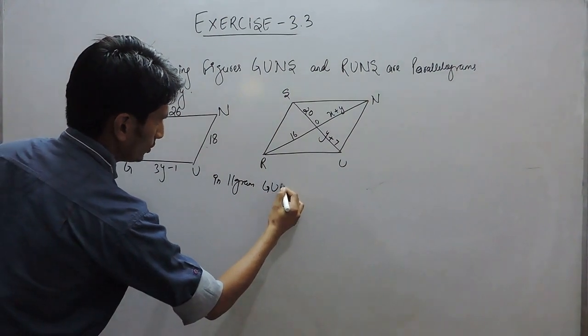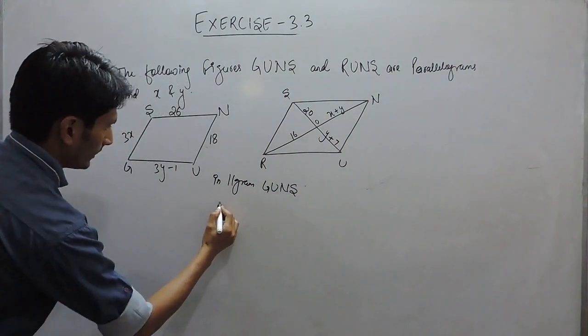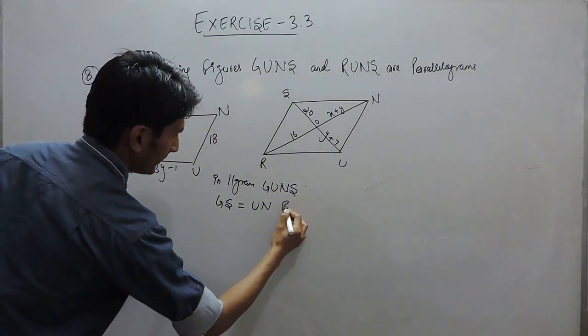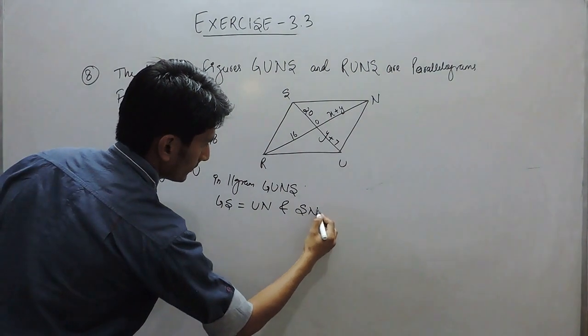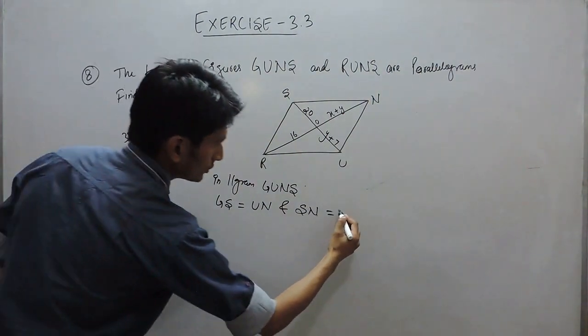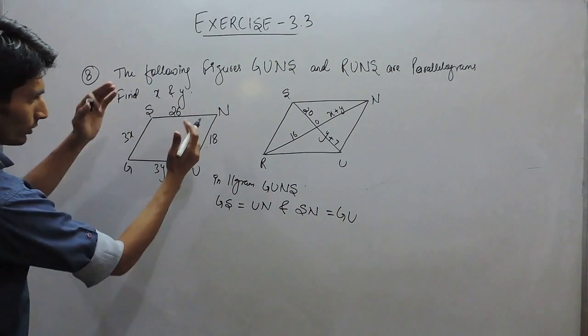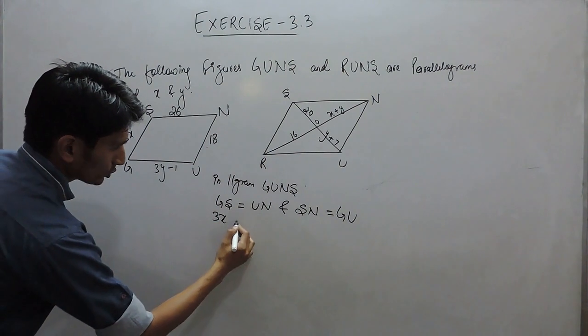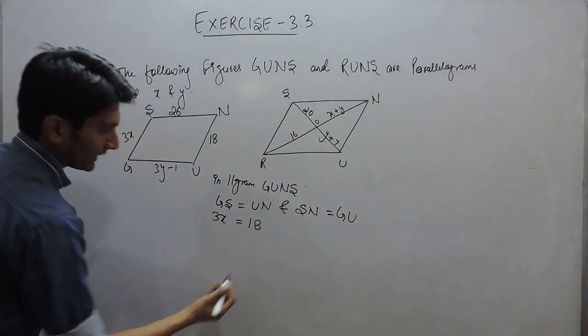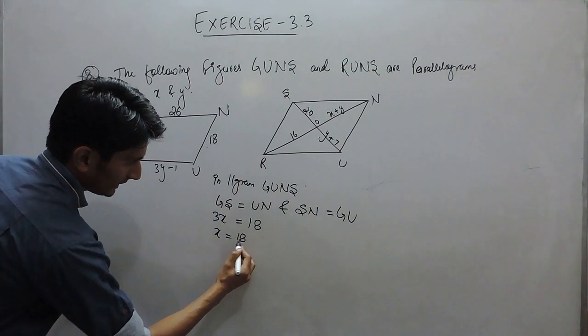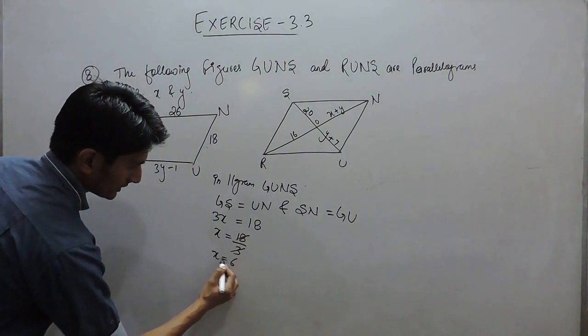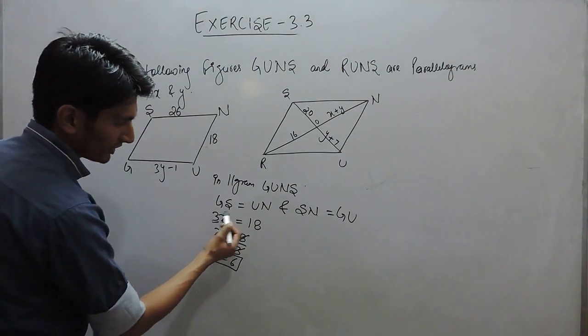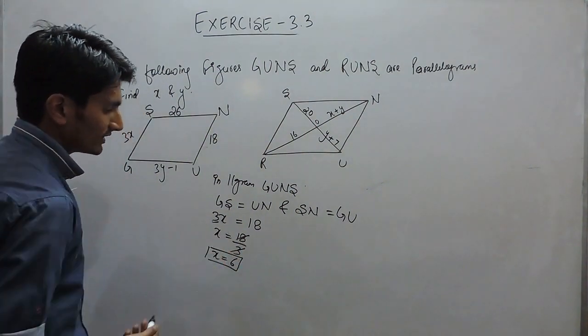So in parallelogram GUNS, GS must be equal to UN and SN must be equal to GU. These two sides must be equal and these two sides must be equal. So the value of GS is 3x. So this must be equal to 18. The value of x must be 18 upon 3, which is equal to 6. Because here it is multiplying x, when it shifted to that side, it should divide 18.